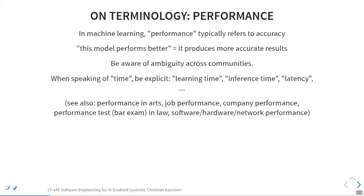From my software engineering perspective, performance means execution time. In machine learning, that would be called inference time or learning time — or sometimes latency. So when somebody says 'this model performs better than another model,' they're probably talking about prediction accuracy. This term is overloaded anyway — in business, job performance means how well somebody does a job. I just want to make you aware of this distinction.